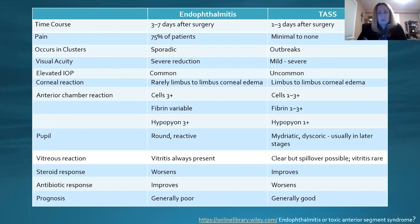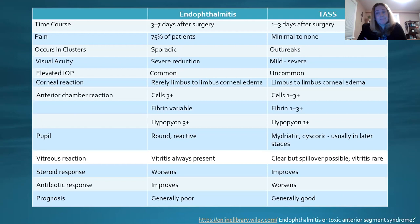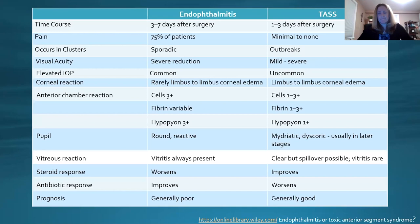Steroid response: in endophthalmitis, steroids can worsen it, whereas in TASS, they will improve it — this is sometimes an indication of how to differentiate between the two. Antibiotic response: the opposite — antibiotics improve endophthalmitis, whereas in TASS they may worsen or show no response. Prognosis for endophthalmitis can generally be poor, depending on how fast you can treat it — typically seen three to seven days after surgery. TASS is seen one to three days after surgery. The prognosis for TASS is typically good with steroids; endophthalmitis can be tough.